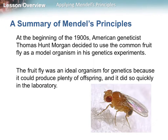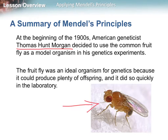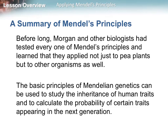Mendel studied plants, but at the beginning of the 1900s, geneticist Thomas Morgan decided to see if Mendel's principles applied to animals as well. He used fruit flies — an ideal organism because, like Mendel's plants, they were relatively simple and could produce many offspring in a short time in a laboratory. Morgan and other biologists confirmed every one of Mendel's principles could be applied not just to plants but to other organisms. The basic principles of Mendelian genetics can be used to study the inheritance of human traits and calculate the probability of those traits appearing in the next generation.